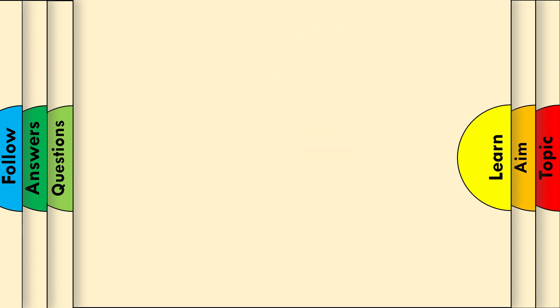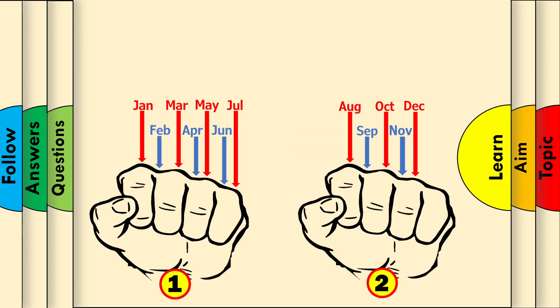Now we know what the knuckles and the fist mean in months. Notice that the knuckle months are red and the groove months are blue. The knuckle months have 31 days and the groove months have 30 days.